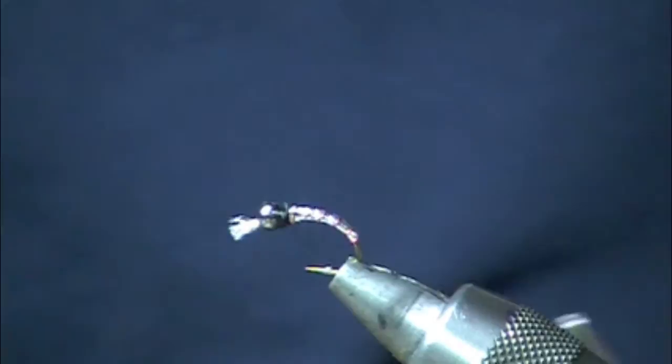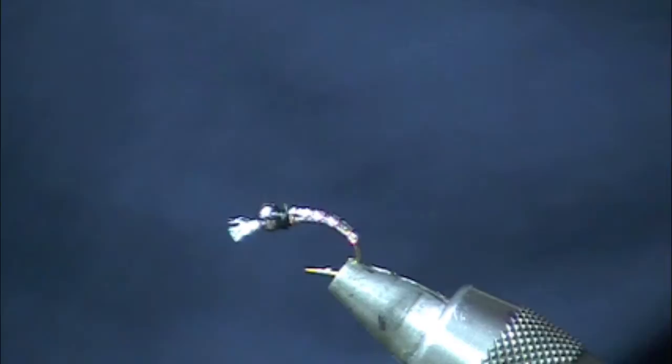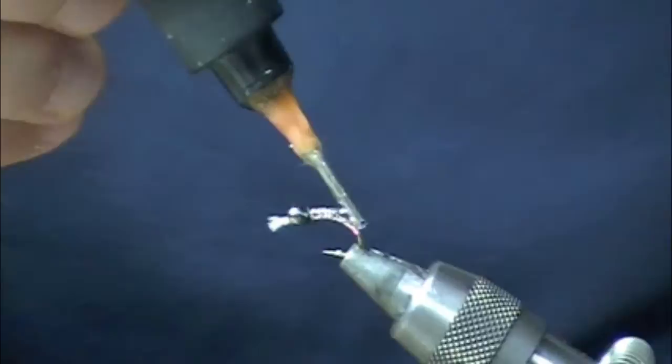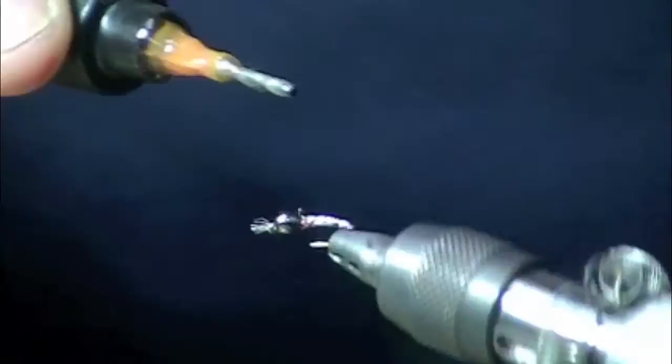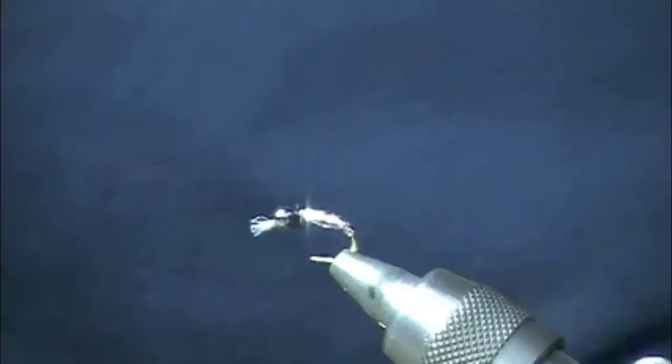So to finish that off and make it a little bit more durable we're going to use some clear cure goo in the hydro form. If you wanted to have a more translucent look, you just increase the amount of the stuff that you're using. I'll keep it moving for just a second here.